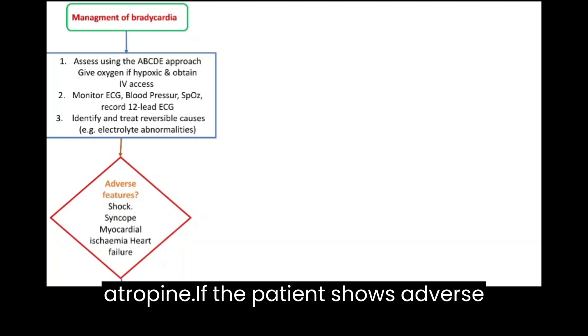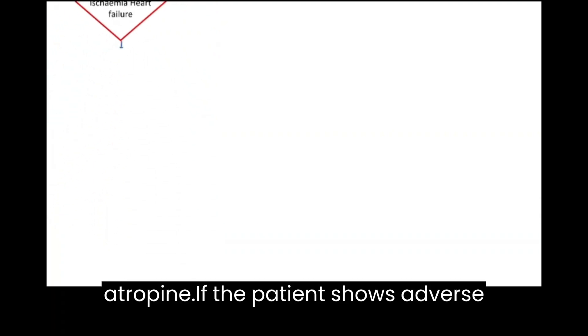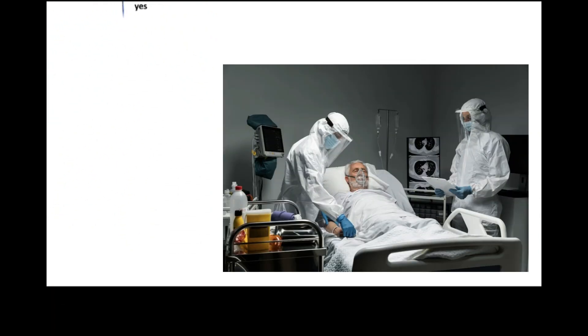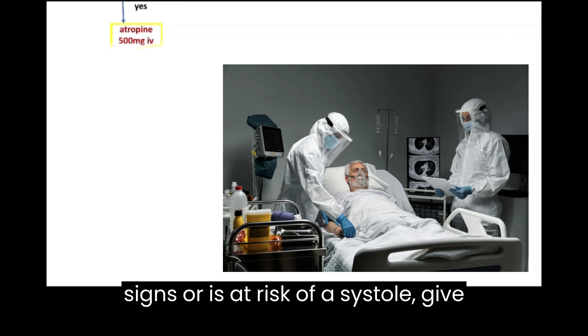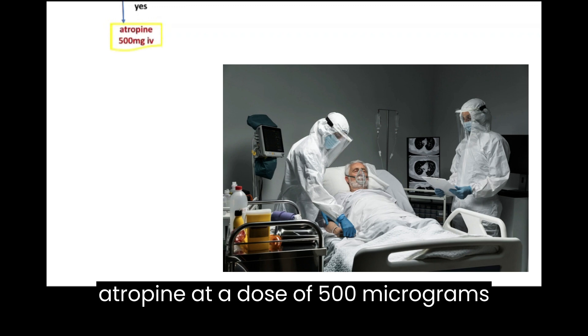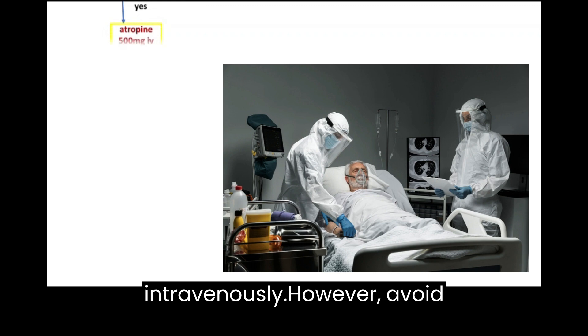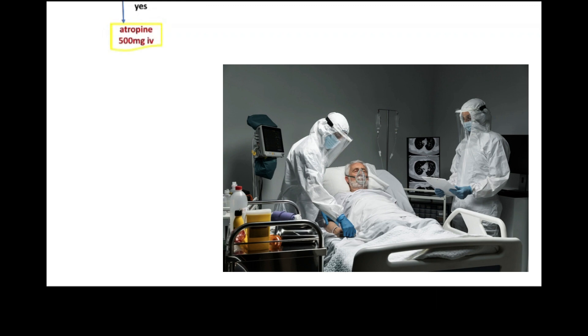Administer atropine. If the patient shows adverse signs or is at risk of asystole, give atropine at a dose of 500 micrograms intravenously. However, avoid using atropine in patients with a transplanted heart.